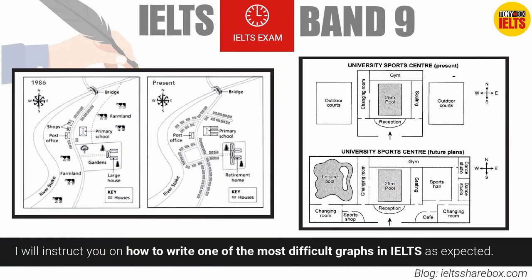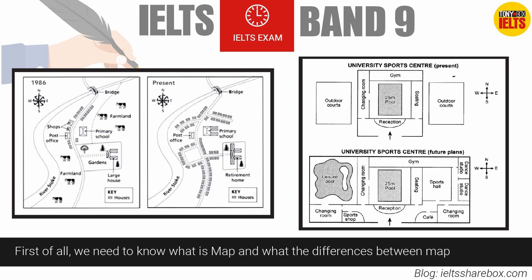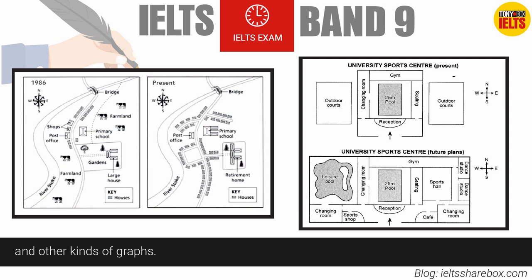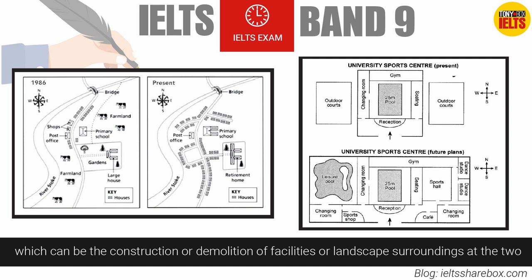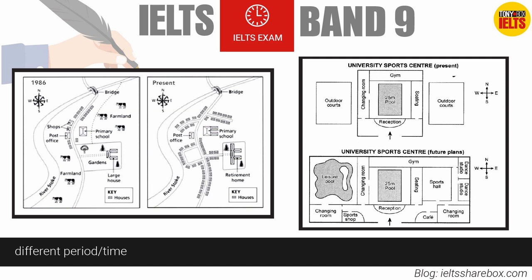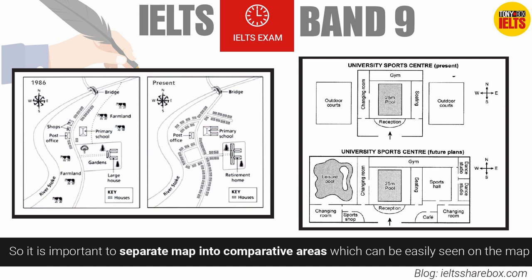Welcome back to the IELTS channel. In this lesson, I will instruct you on how to write one of the most difficult graphs in IELTS — the map. First of all, we need to know what a map is and what the differences are between a map and other kinds of graphs. A map is a kind of graph which mainly focuses on the changes of one location, which can be the construction or demolition of facilities or landscape surroundings at two different periods of time.